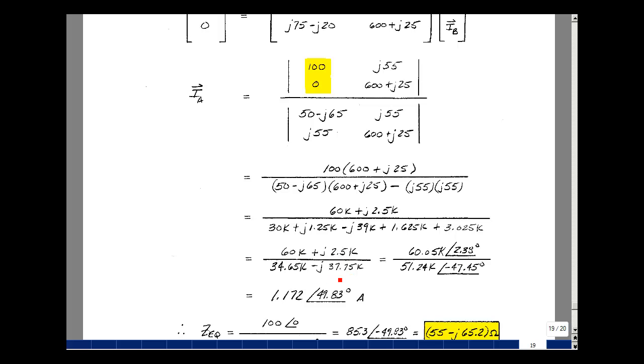Be in the fourth quadrant with this one. Be a little bit more negative than 45, it's a little bit longer than this. And of course, the hypotenuse will be longer than either of these two, and about 51,240. The ratio of these two is a little bit more than one, and then I take this angle minus the denominator angle, and I get a minus 47.45 added to 2.38, so I get 49.83.